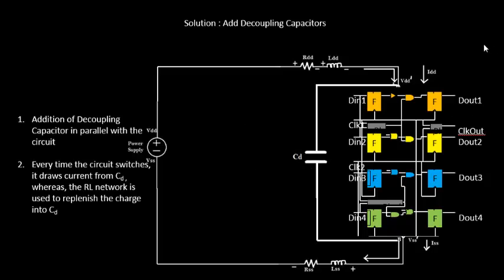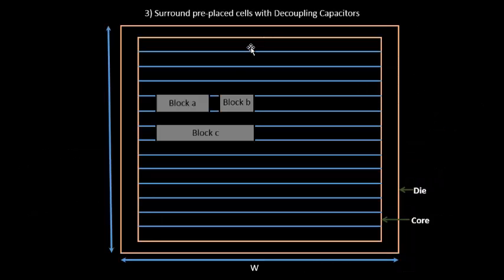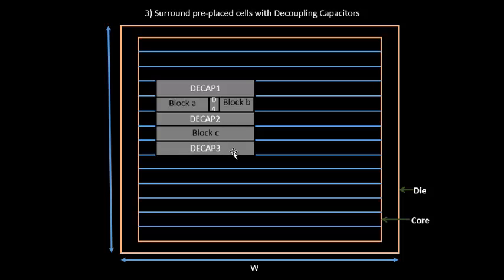On the chip, decoupling capacitors are placed surrounding the preplaced blocks — placed here, here, and here around the blocks. This ensures all preplaced cells get their supply from the nearby decoupling capacitors. The blocks will now behave correctly with no missed switching activity, no crosstalk problems, and no cases where logic 1 is not recognized as logic 1.